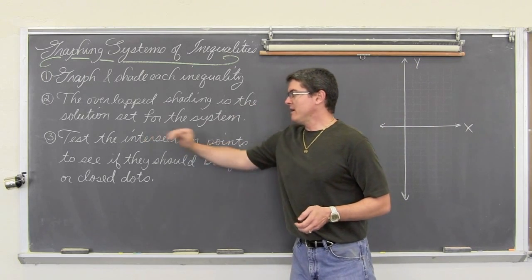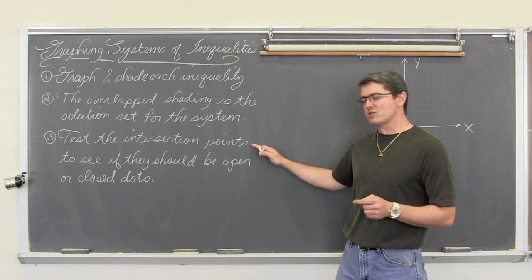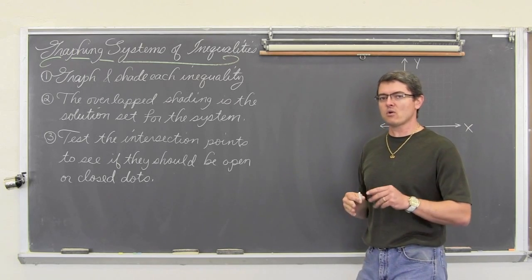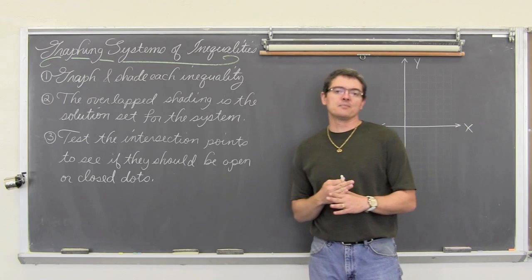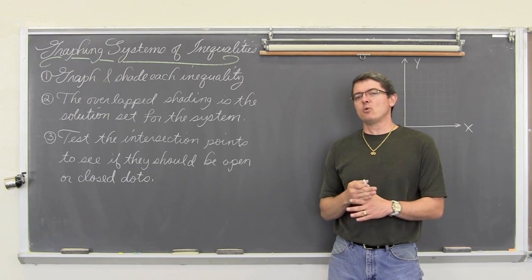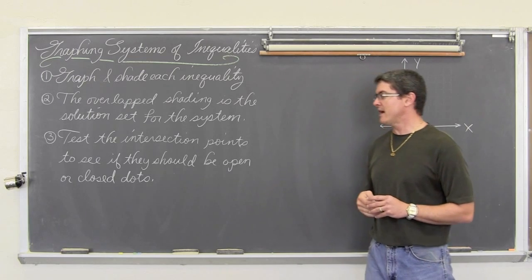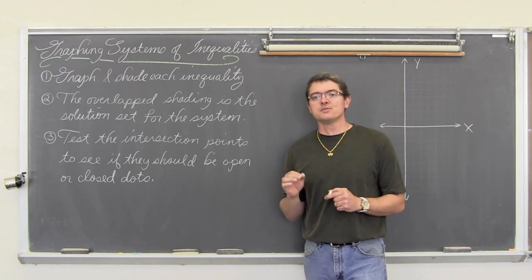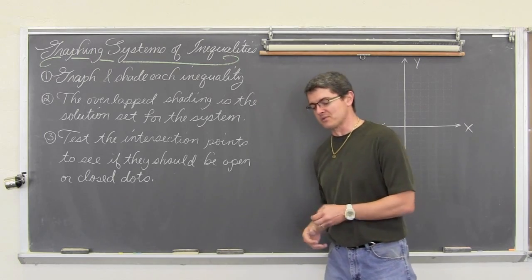What we are going to be concerned with is testing the intersection point between the inequalities — in other words, where do the graphs intercept? You might want to actually find that intersection point, but you can also figure this out logically by looking at it. Are those intersection points going to be closed or open dots? We will be talking about that as we work through our two examples.